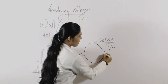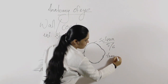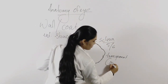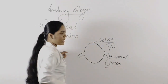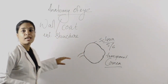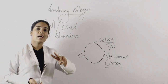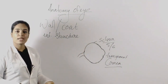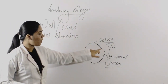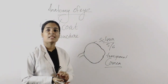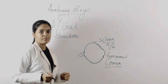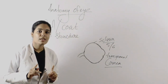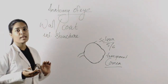In the anterior 1/6 area, we have a transparent membrane and it is known as cornea. So the outermost layer of the eye is the protective layer and it has two parts: the posterior 5/6 is sclera, and the anterior 1/6 is transparent and known as cornea. Its duty is to protect the internal structures.